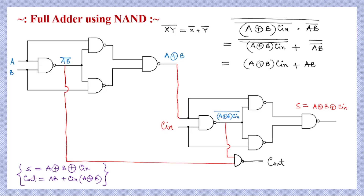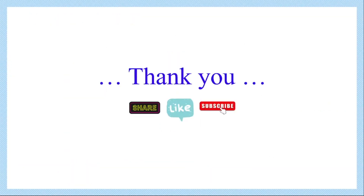In this whole circuit we can see that by using a total of nine NAND gates we can implement a full adder circuit. The implementation of C_out is a little tricky and we need to remember it carefully. I hope this design of a full adder circuit using NAND gates is clear to you. Thank you.